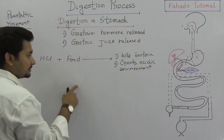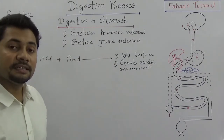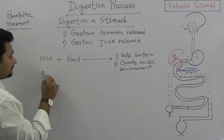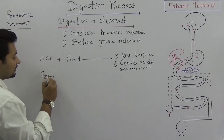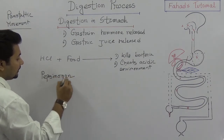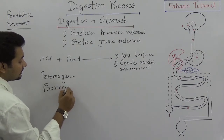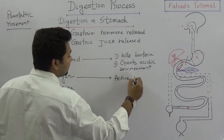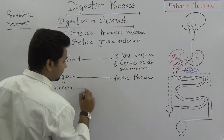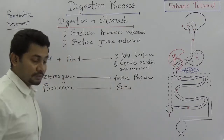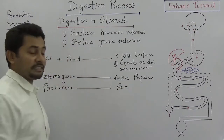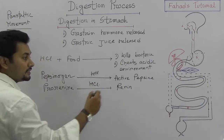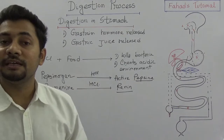HCl also activates some enzymes. Pepsinogen and pro-renin are the inactive forms of enzymes present in the stomach. With the help of HCl, pepsinogen is converted into active pepsin, and pro-renin is converted into renin. These are proteolytic enzymes activated by the acidic environment.